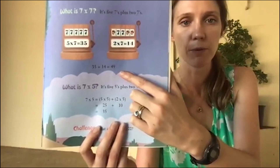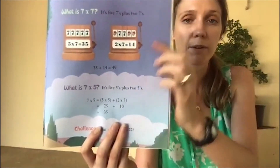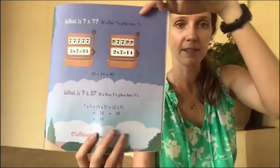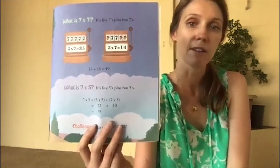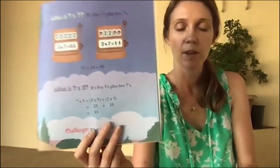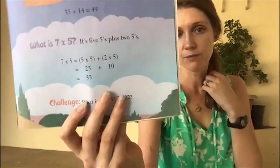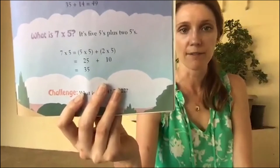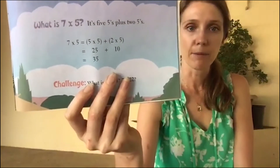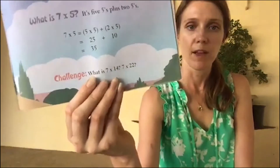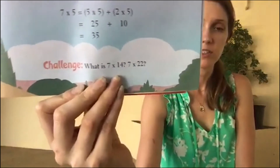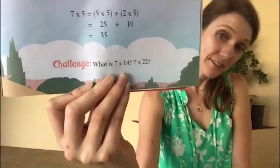Then we add them together: 35 plus 14 is 49. Really, we're just doing partial products — breaking the sevens into easier numbers. Instead of 7 times 7, we do 7 times 5 plus 7 times 2. And what's 7 times 5? It's five fives plus two fives: 25 plus 10 equals 35. There are your challenges — I know you're up to them!